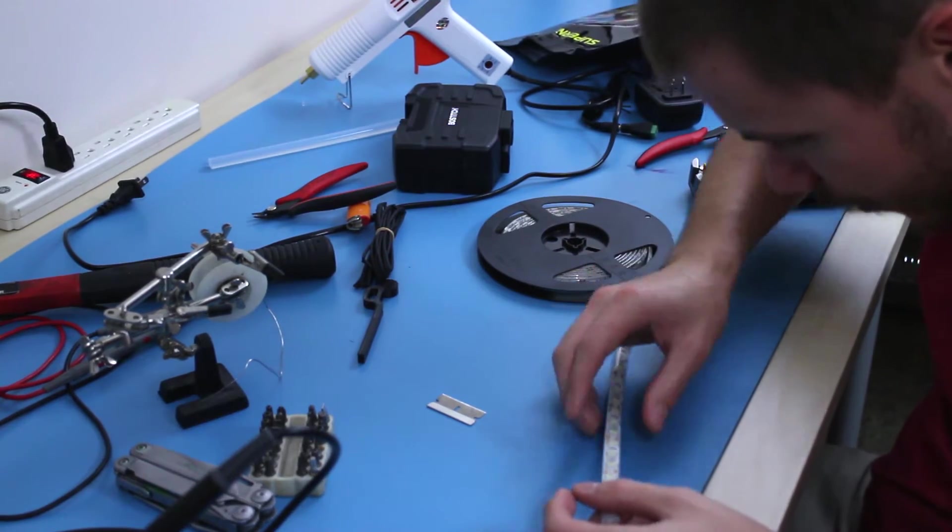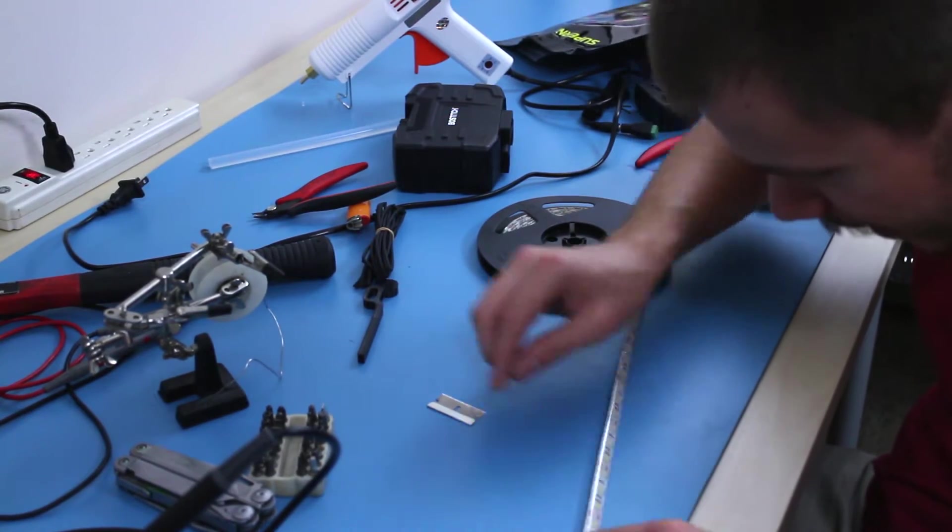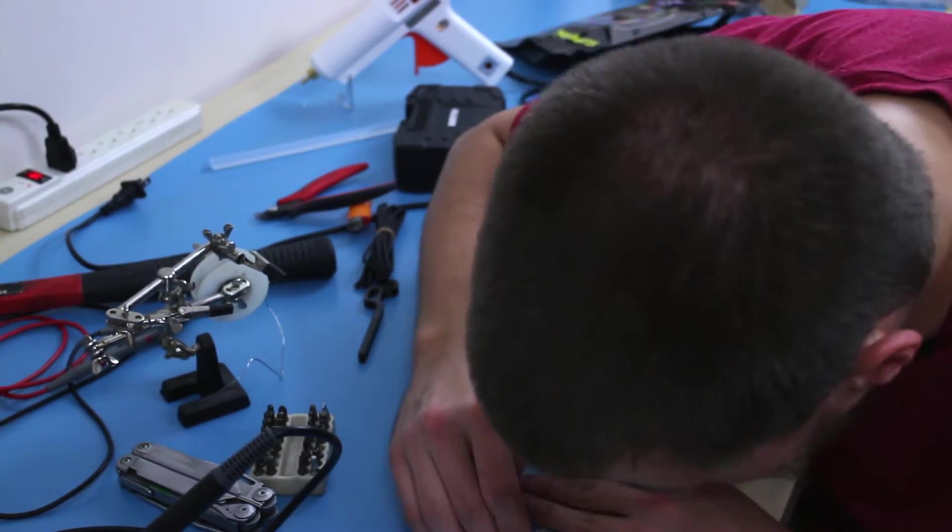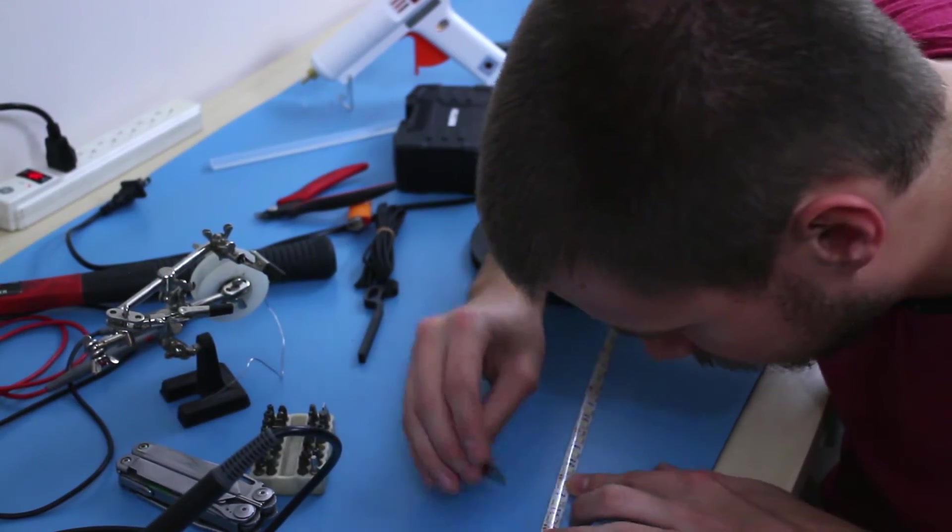Usually it's next to these little copper contacts where you can solder in something. Otherwise you will ruin the circuit and you'll have to cut back a bit and waste some LEDs.